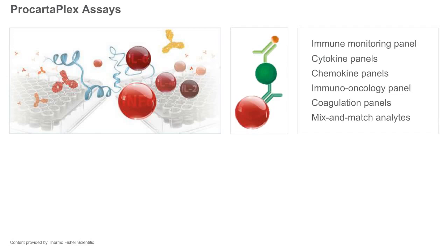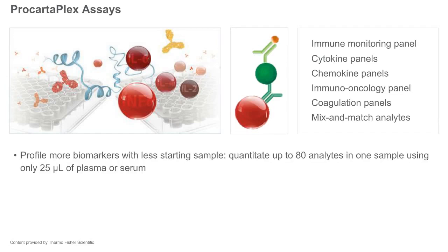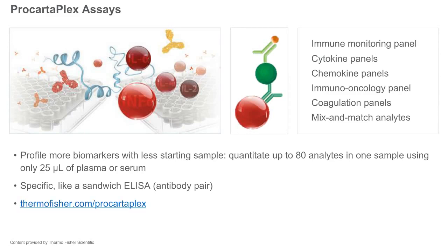Thermo Fisher's Luminex-based immunoassay is called the ProcartaPlex assay. With ProcartaPlex, you can quantitate up to 80 analytes in one sample using only 25 microliters of plasma or serum. There are several pre-designed panels available, such as immuno-oncology, or you can select analytes to configure your own mix-and-match panel.